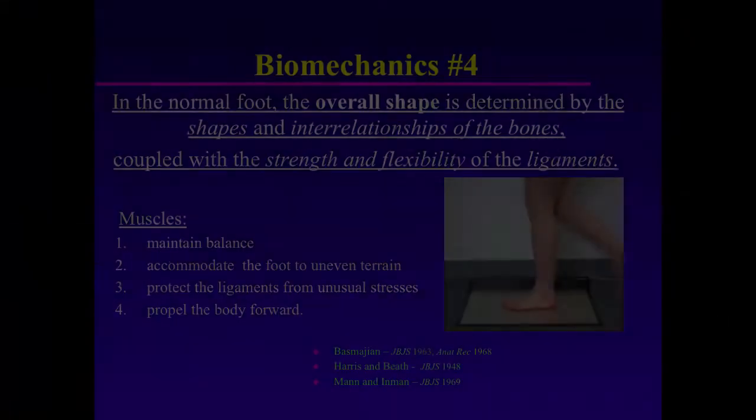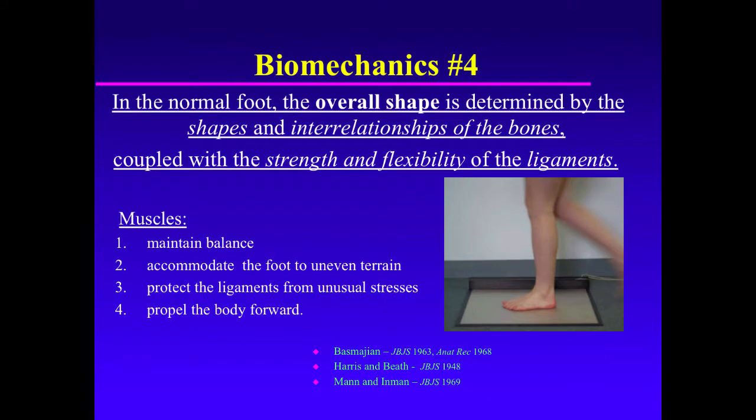Biomechanical Principle Number 4: The shape of the foot is determined by the bones and ligaments, and not by the muscles. In the normal foot, the overall shape is determined by the shapes and interrelationships of the bones, coupled with the strength and flexibility of the ligaments — not the strength and flexibility of the muscles.